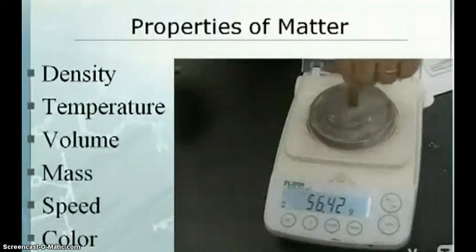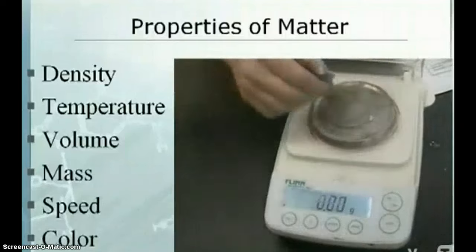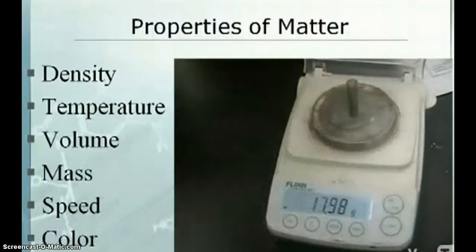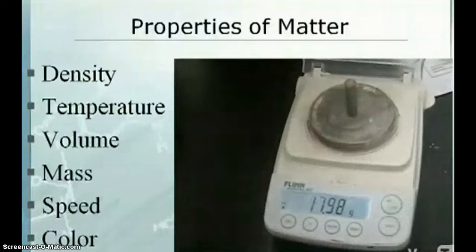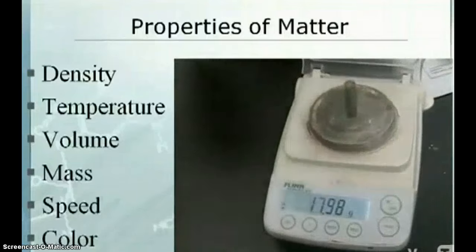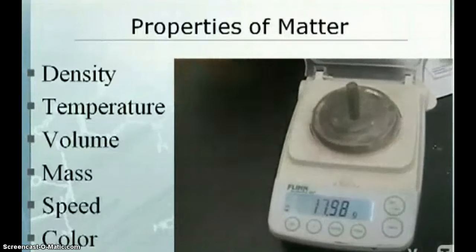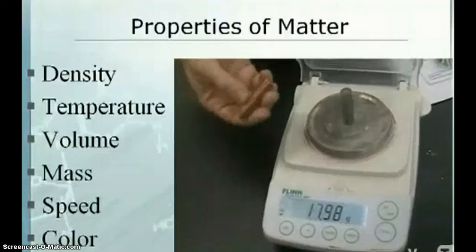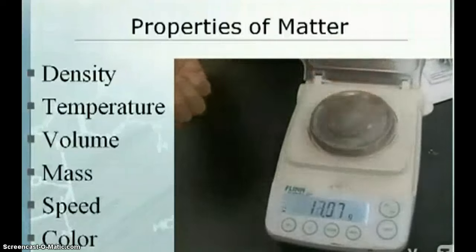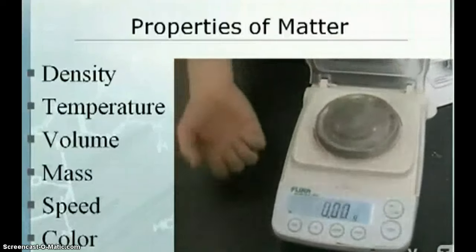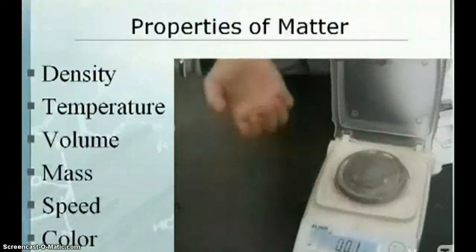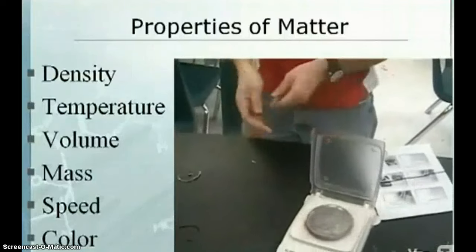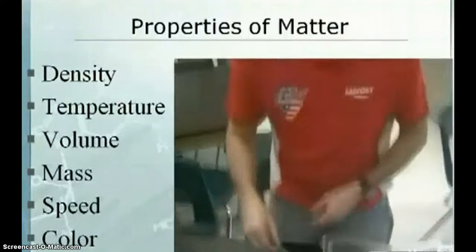The copper one has a mass of 56-and-change grams. If I take the aluminum and put it on the scale, it only weighs about 17 to almost 18 grams — a lot less mass for the same amount of volume. If you were to hold these in your hand, you'd say the copper one is really heavy and the aluminum one is light. That's a good illustration of density.